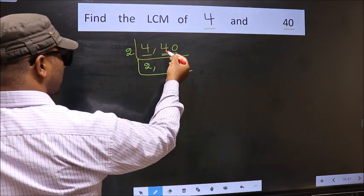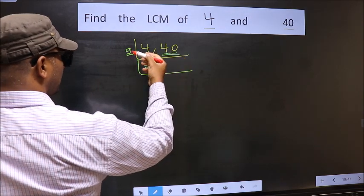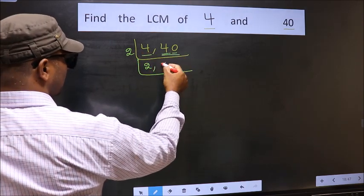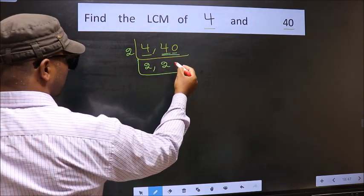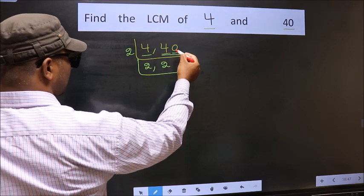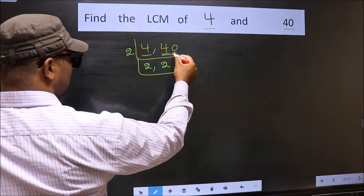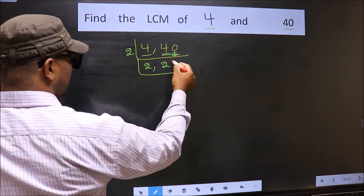First number: 4. When do we get 4 in the 2 table? 2 times 2 is 4. Now the other number: 40 divided by 2, bring 0 down.